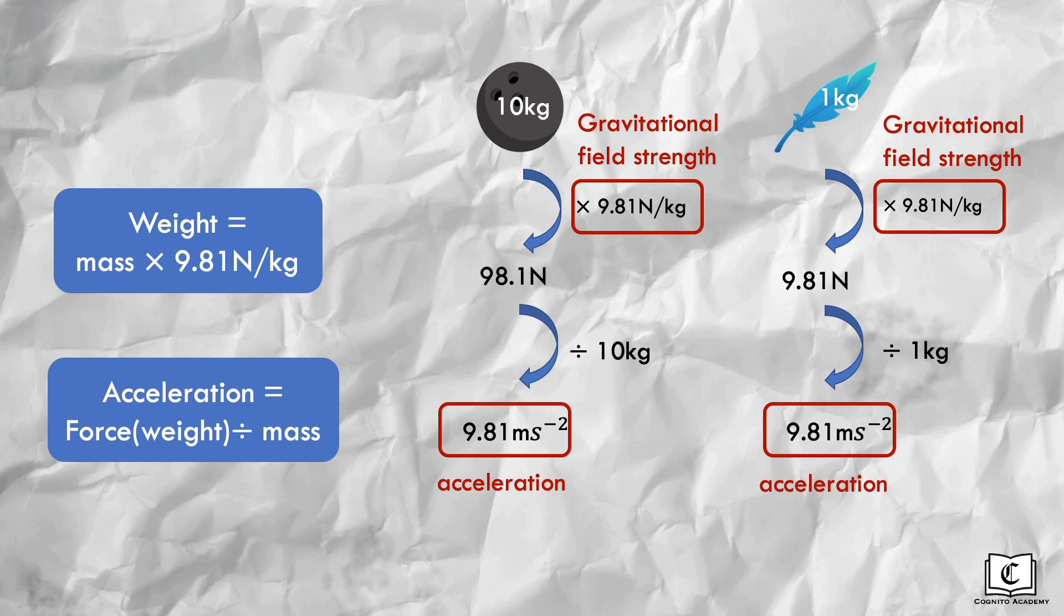Another observation is that gravitational field strength is numerically similar to the acceleration due to gravity. And this is true regardless of the mass or the gravitational field you are in. So in these scenarios, we have learnt that objects in free fall without air resistance will accelerate down at 9.81 meters per second squared regardless of mass.